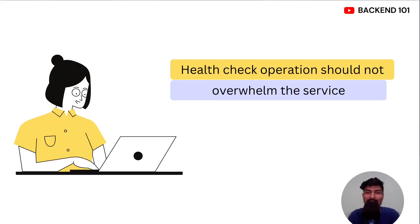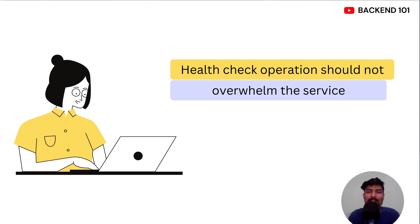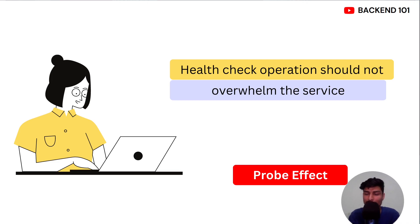One thing we should keep in mind is that the operations or tasks we perform to check whether a service is healthy should not consume too many resources — they should be minimalistic and use resources as little as possible. For example, if you want to check if a service can make a connection to the database, we don't need a query that joins 50 plus tables — that would simply waste the resources of that service. If health check operations are wasting service resources and affecting performance, this condition is known as the probe effect, and we should minimize the probe effect as much as possible.